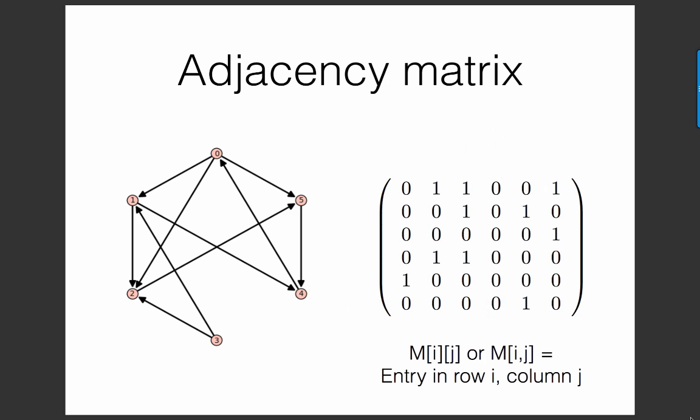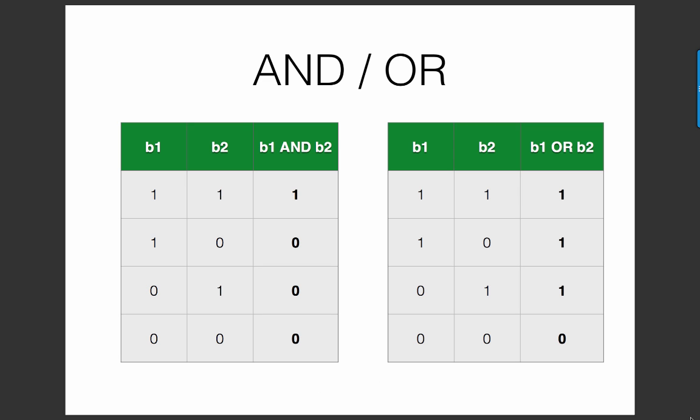Warshall's algorithm manipulates this adjacency matrix by thinking of the entries as bits, and then performing logical operations on the bits. Let's review for a second the two logical operations that we will see. Now in basic logic, we learned about the AND and OR operations on true-false values, which we can think of as bits, with 1 standing in for true and 0 standing in for false.